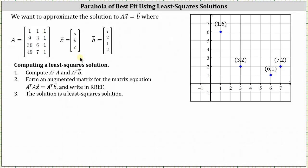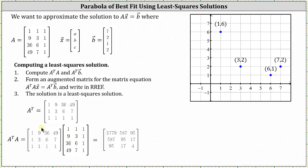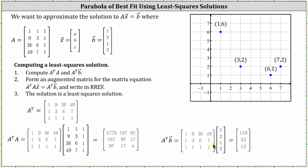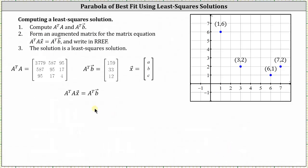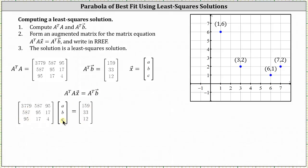Let's find A transpose — the columns of matrix A become the rows in A transpose. We then need to find A transpose times A, which I've already computed; the result is a three-by-three matrix shown here on the right — you may want to pause the video and check this. We also need A transpose times vector b, which is a three-by-one matrix shown on the right — you may want to pause and verify this as well. Now we solve the equation A transpose A times vector x equals A transpose times vector b.